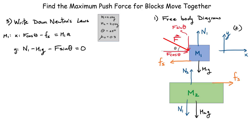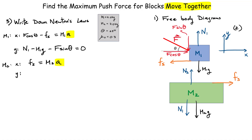Now we look at the bottom block M2. In the x direction it's very simple — there is only one force, and that's the static friction between both blocks. So: static friction force equals M2 times A. We know the acceleration is the same A for both blocks because we want them to move together — that was a key condition. In the vertical direction for M2: N2 minus N1 minus M2g equals zero — no vertical acceleration.